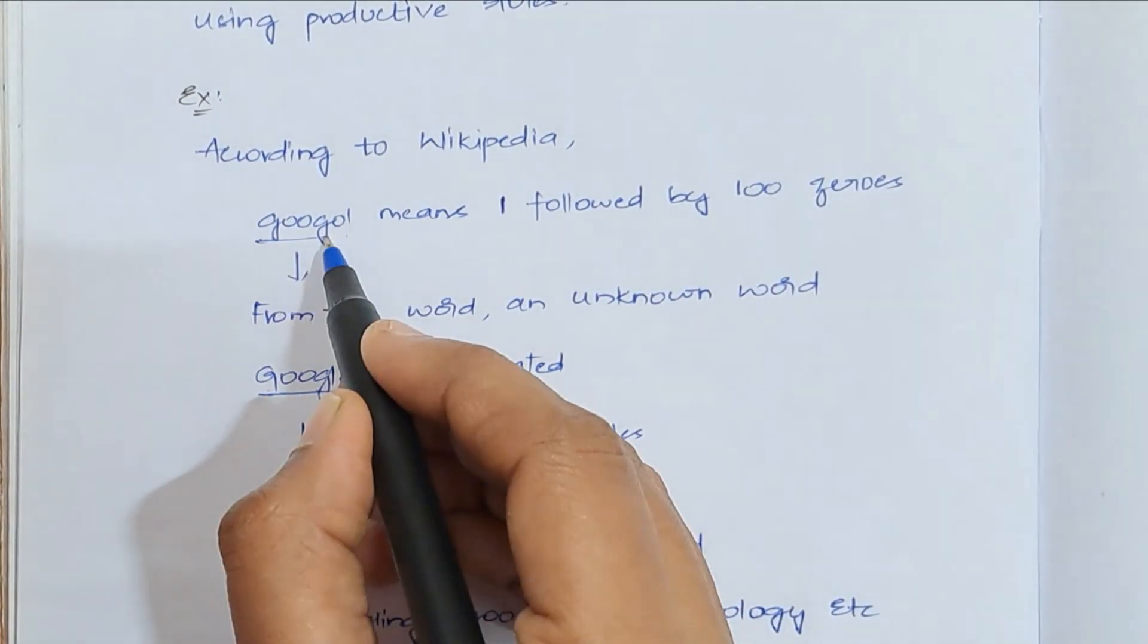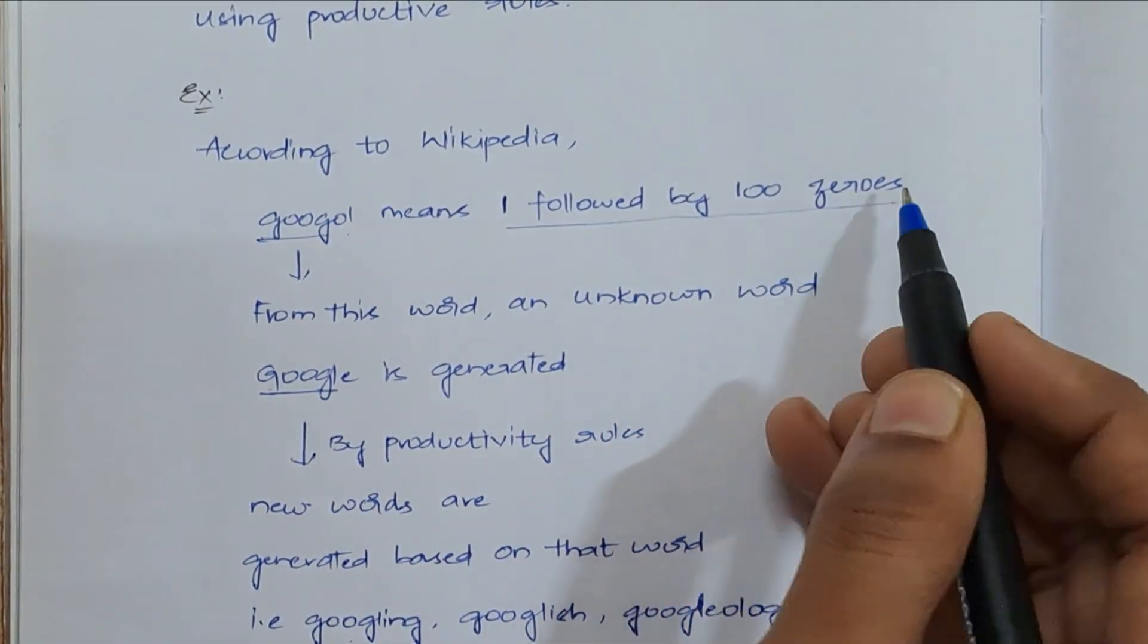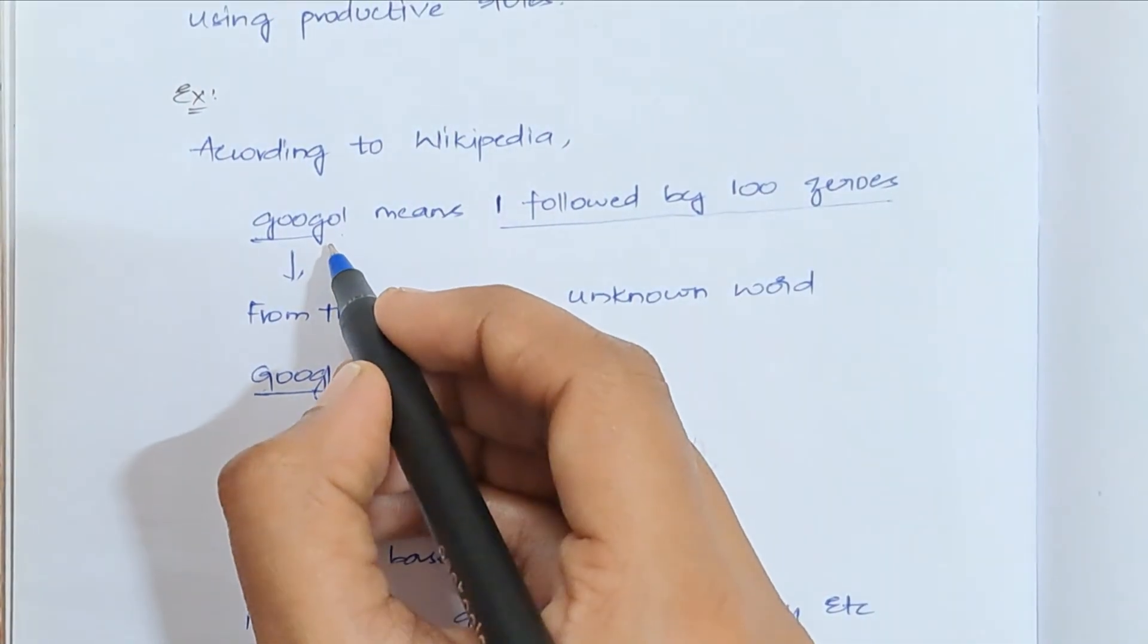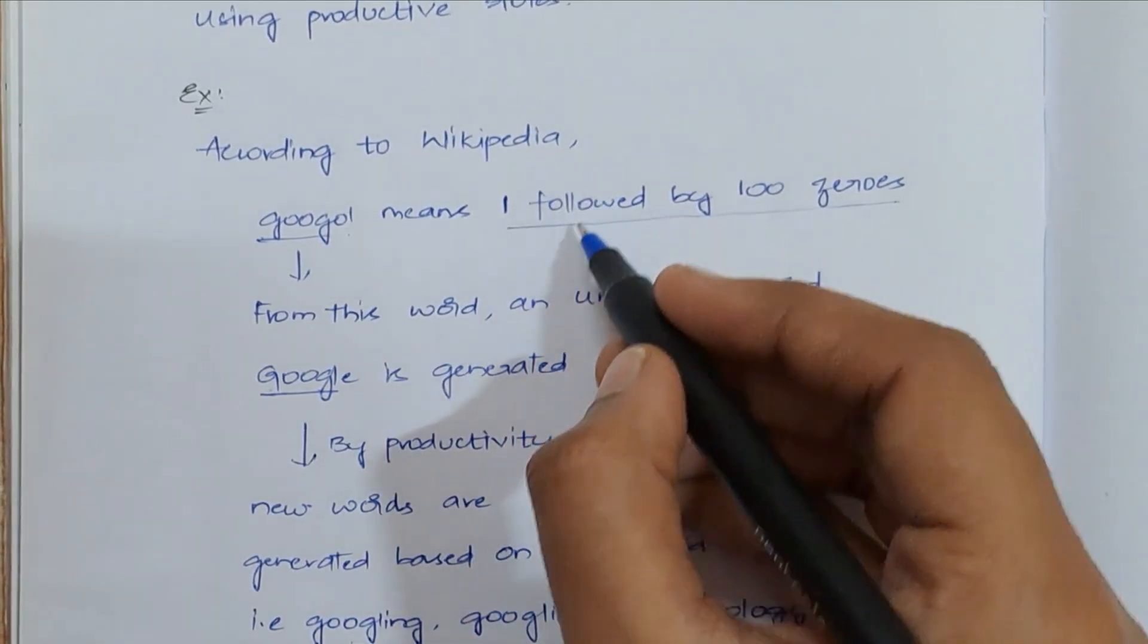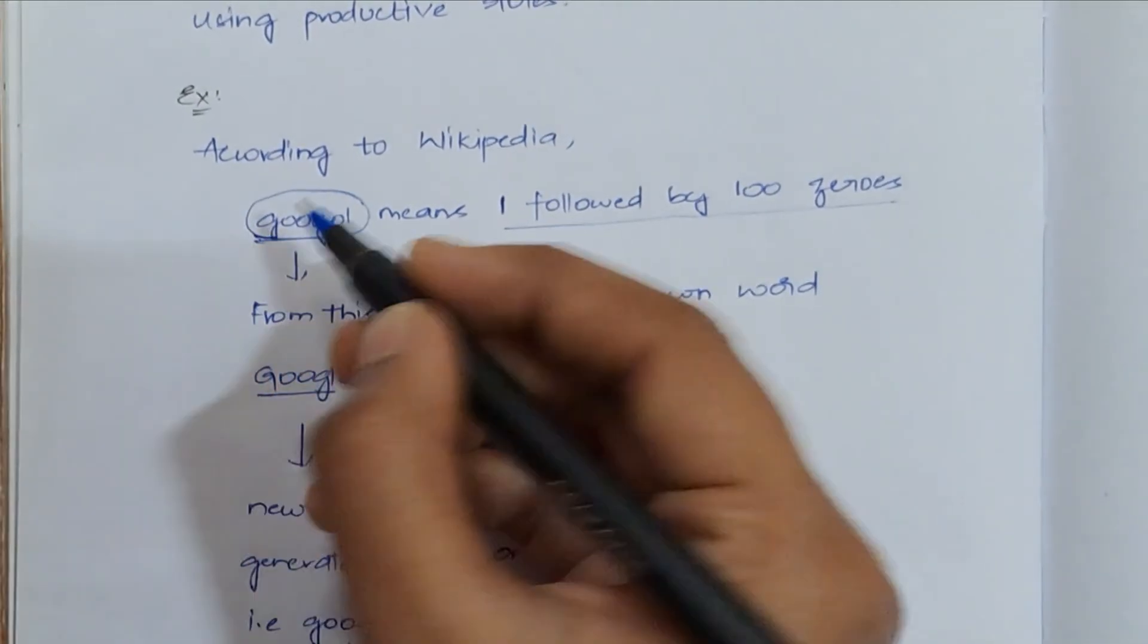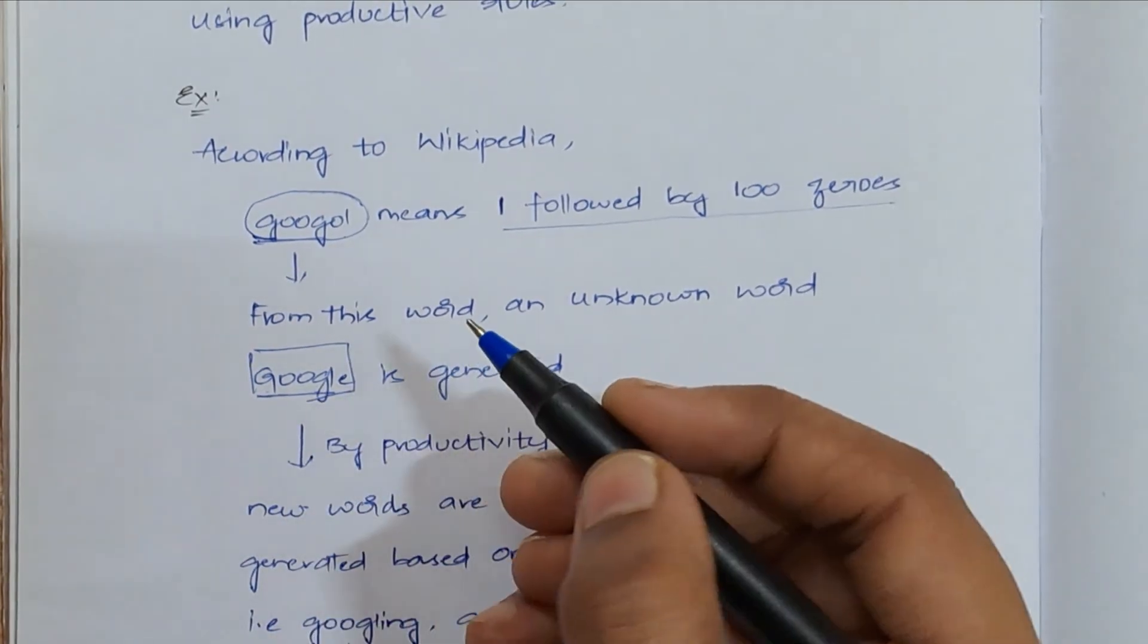According to Wikipedia, Google means one followed by 100 zeros. It is not Google, it is actually Googol. Googol means nothing but one followed by 100 zeros. Actually from this word, they have derived this Google word.